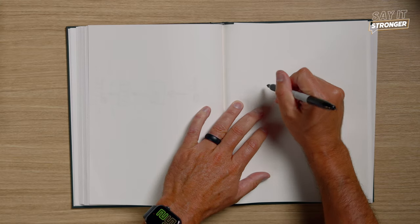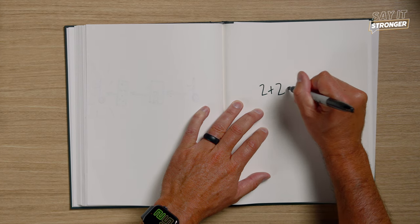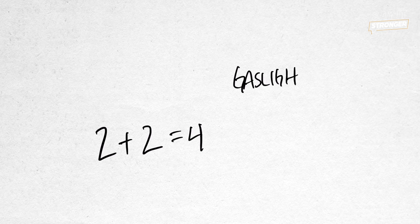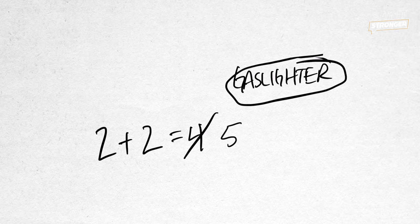If we were going to make gaslighting a math problem, it looks like this: we know that two plus two equals four. But a gaslighter says, 'Oh no, two plus two doesn't equal four — it equals five. You didn't know that? How could you not know that? Of course it's five.' And you're sitting there going, 'No, I know two plus two is four.' But through the gaslighting and manipulation, they ultimately convince you that two plus two is five, even though you know that's not true.